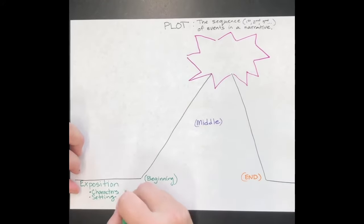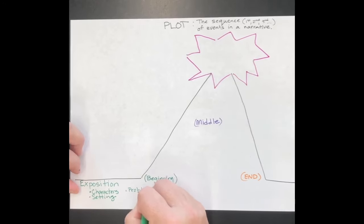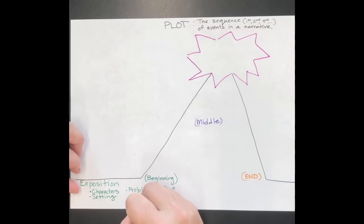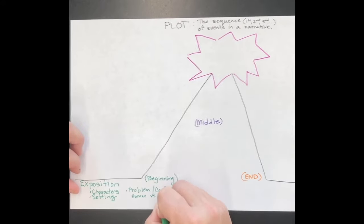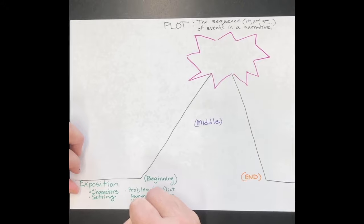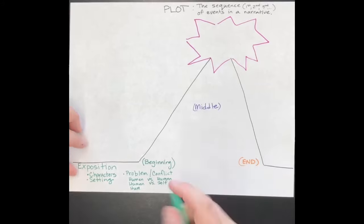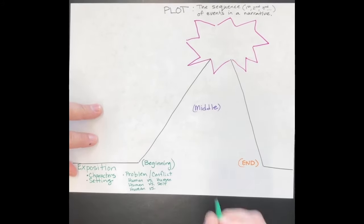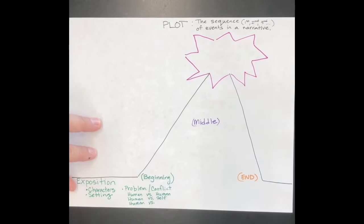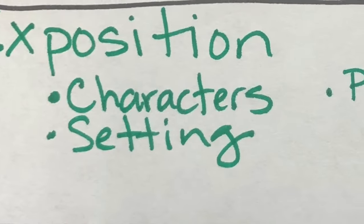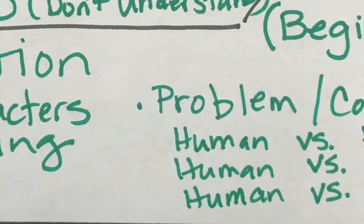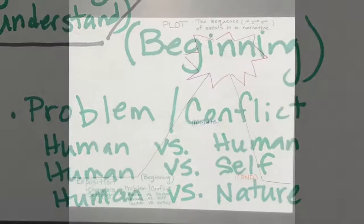A big part of plot is the problem or the conflict. We talked about this briefly yesterday with questions five and seven. Conflict can be person versus person, human versus human. You can also have conflict where the character is battling something within themselves—human versus self, or human versus nature, human versus the world.